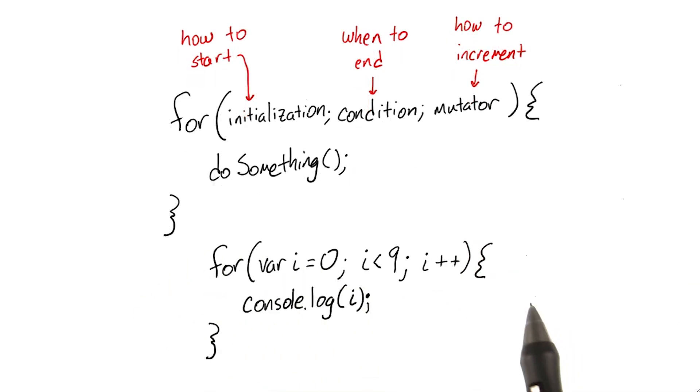So for example, in this for loop, we initialize an incrementer i by using the same var syntax we've been using all course. Then we set the condition i less than nine using an operator that we saw before. And then we increment i by one by adding i plus plus. For every trip through the loop, we're going to console.log i.